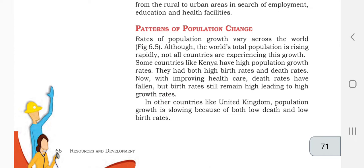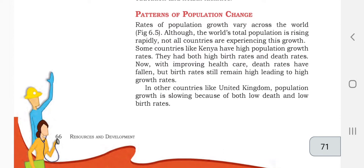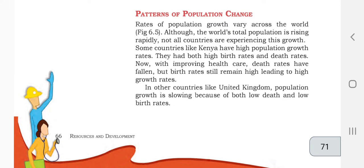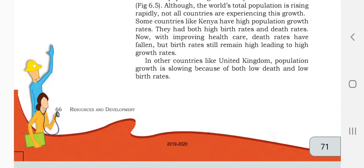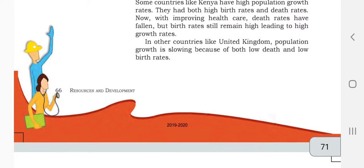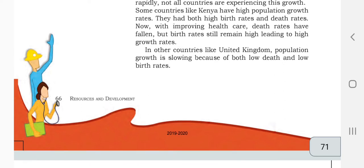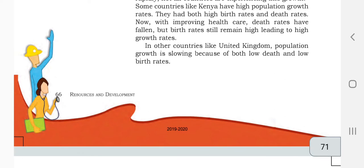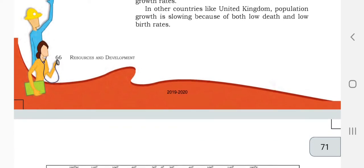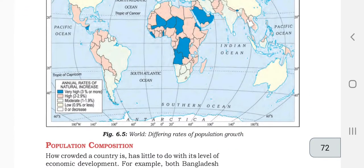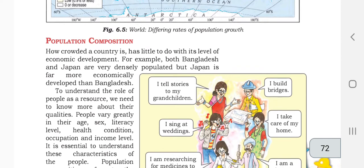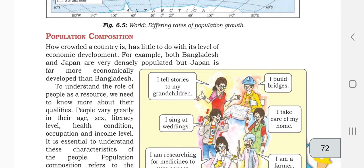With improving healthcare, death rates have fallen in some areas but birth rates still remain high, leading to high growth rates. In countries like the United Kingdom, population growth is slow because of both low death and low birth rates. In big countries like the United States, there is also low birth rate and low death rate, so there are no rapid changes in birth rate or population.